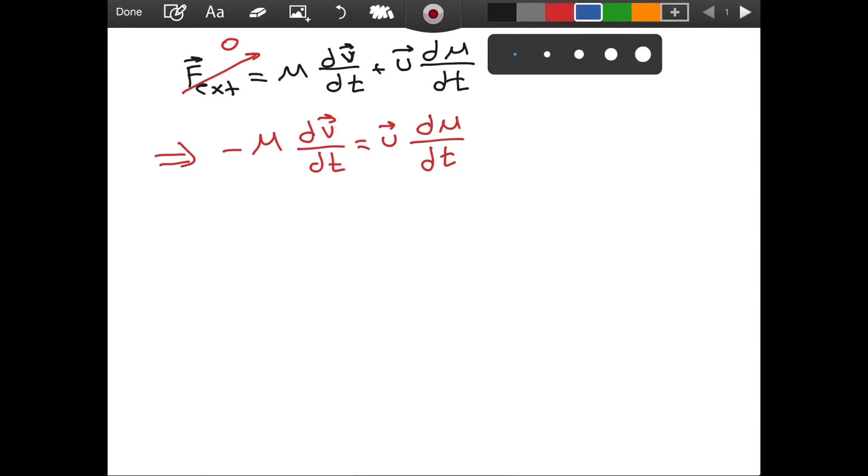Here, I can neglect the dt's. Since we have time derivatives on both sides, this means the thing that we take the derivative of should be equal. So we can neglect the dt's. And if I now divide both sides by negative M, I am going to have dv is equal to negative u divided by M times dm.